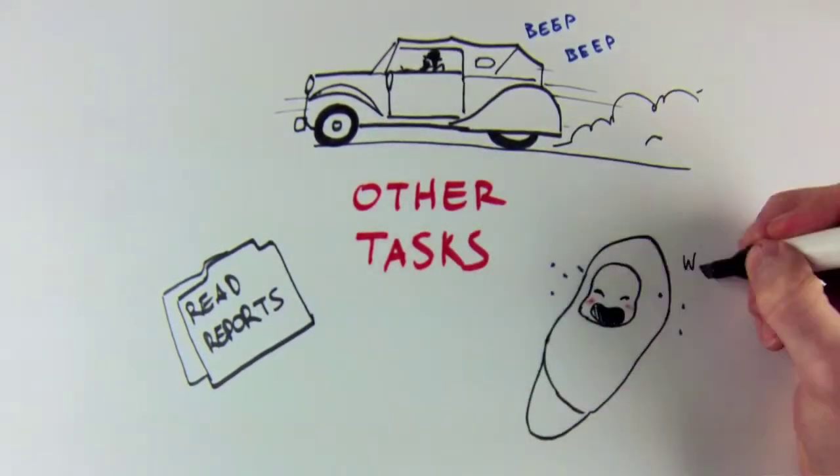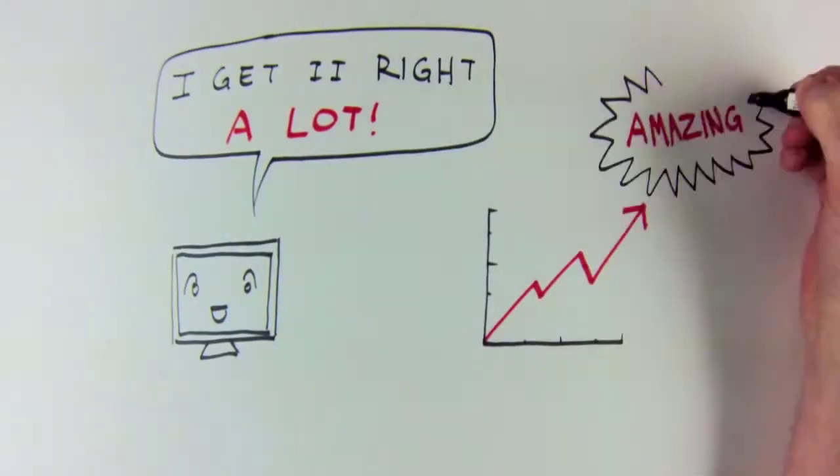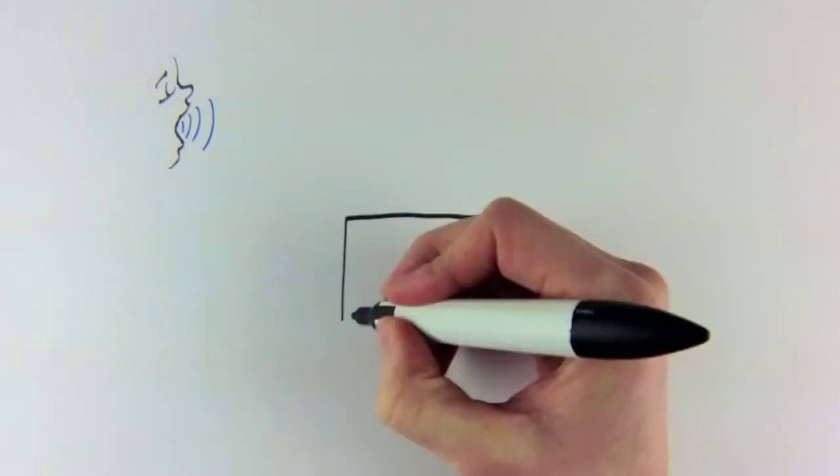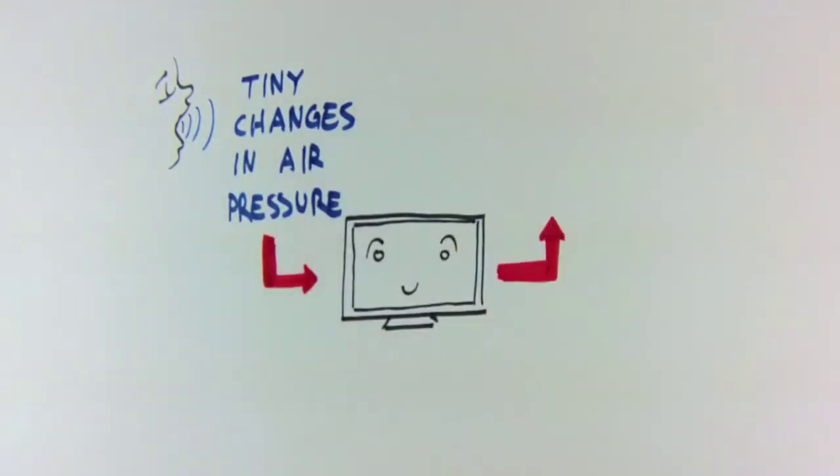Sure, sometimes the computer gets it wrong, but a lot of the time it also gets it right, which is really amazing when you think about what a computer, phone or other device has to do to turn human speech into words. Turn sound waves, which are little more than tiny changes in air pressure that happen really fast, into language.